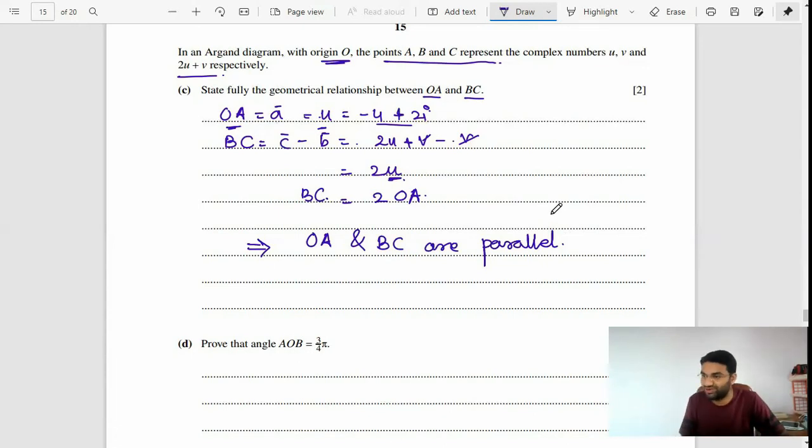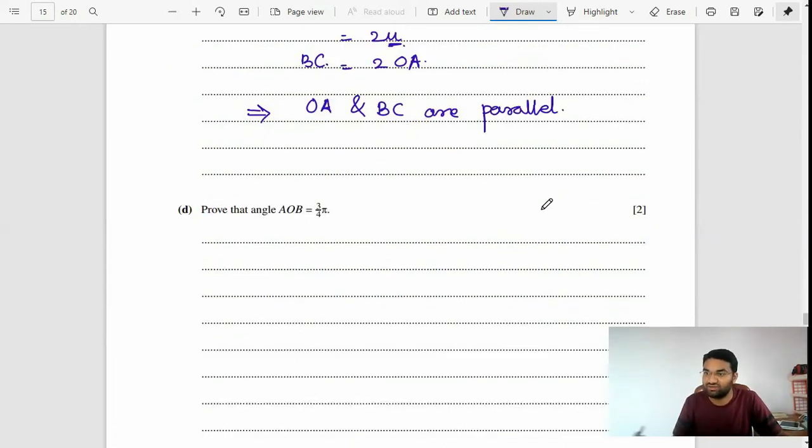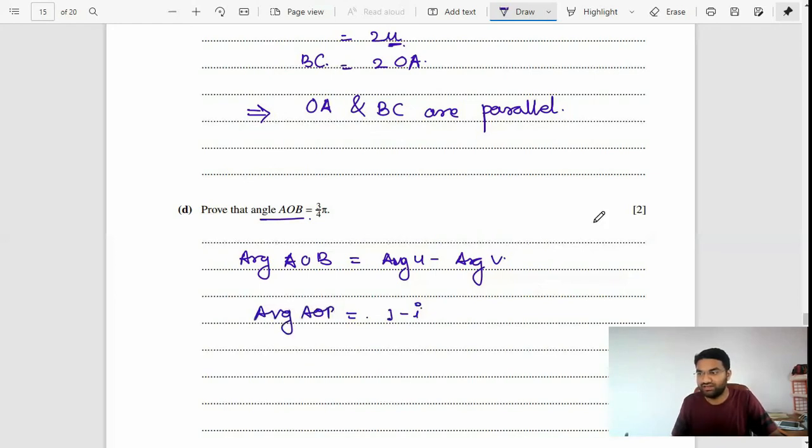The last question: prove angle AOB is 3 pi by 4. You have to take the argument of u minus the argument of v, which is the argument of AOB. This is the argument of u minus v, which equals the argument of 1 minus i.